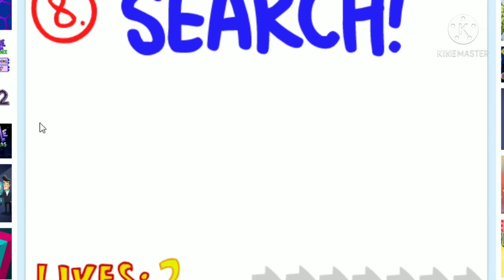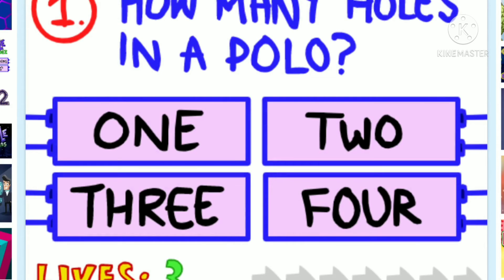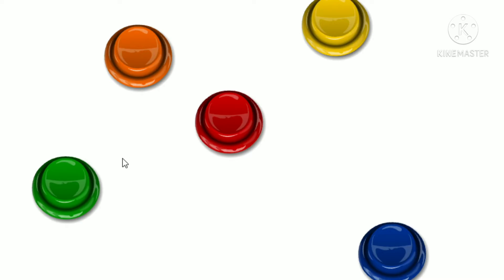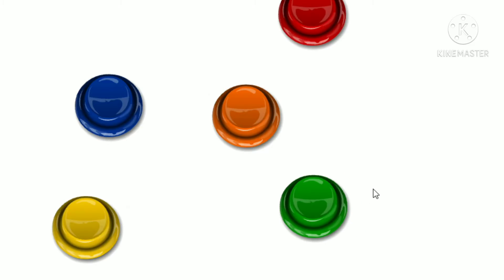I almost forgot, red button twice, green button once. Press the blue button three times, then the orange button four. So one, two, three.